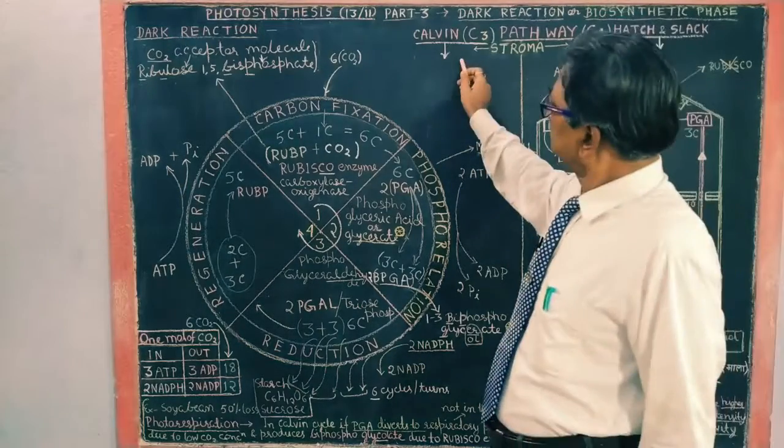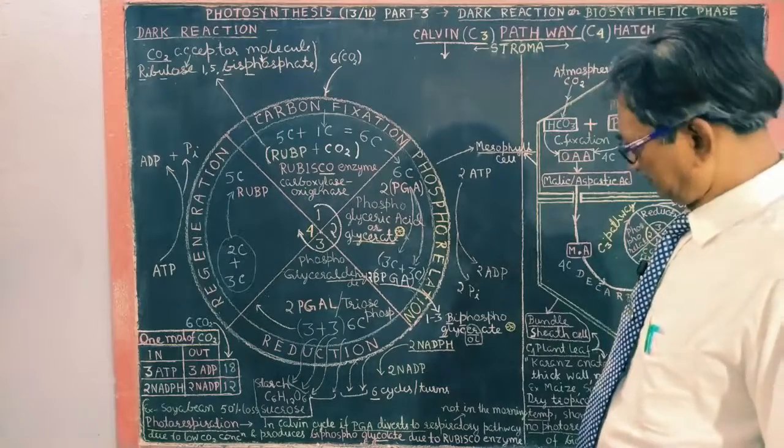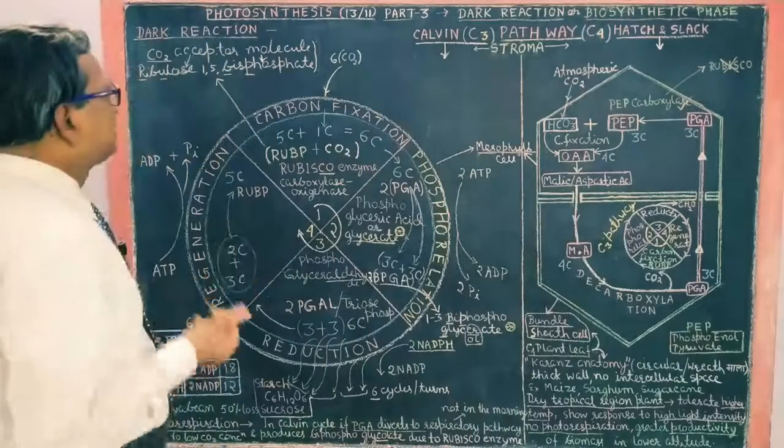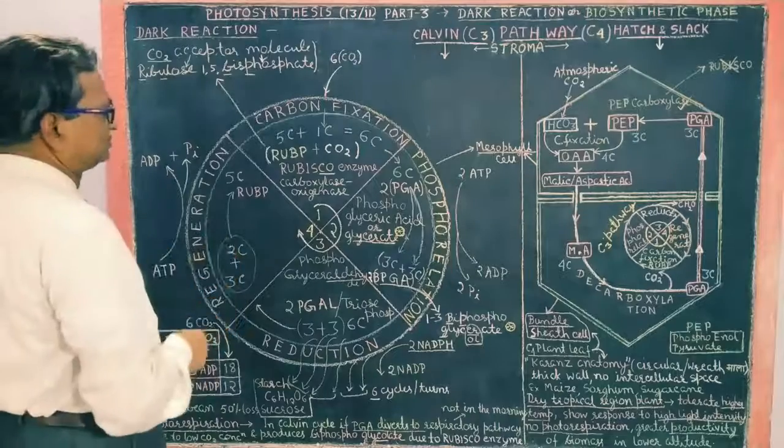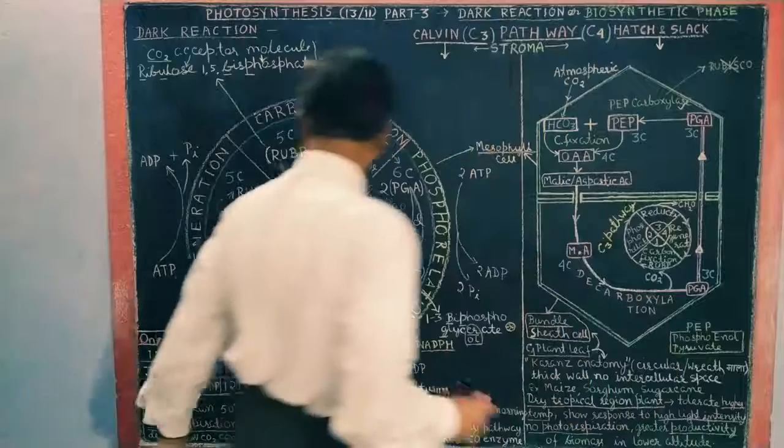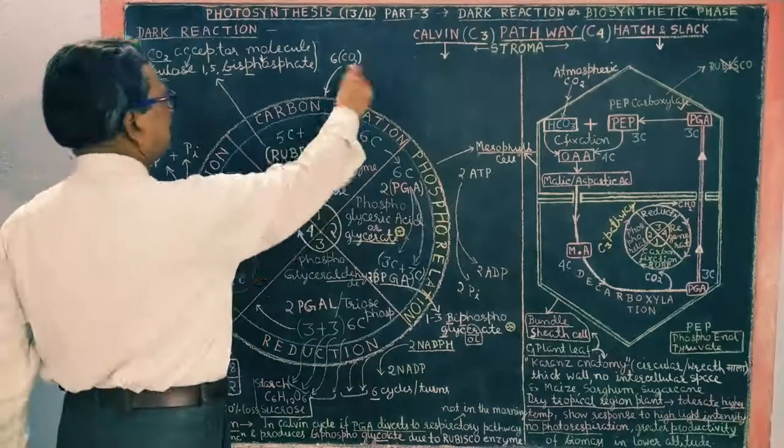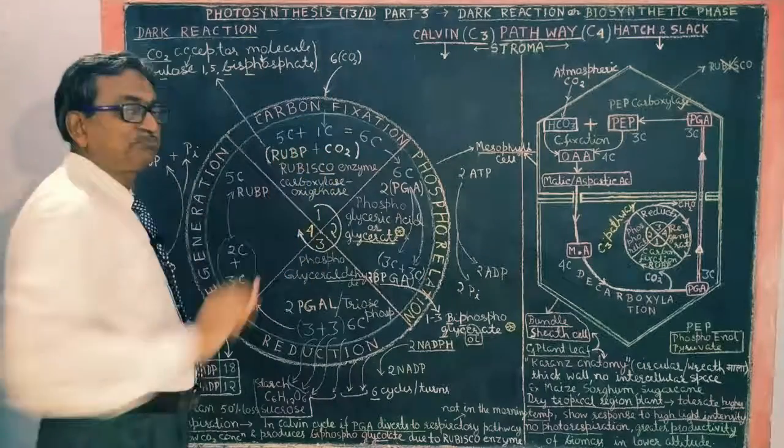It is named after the scientist who discovered this cycle. So most of the plants follow this cycle, Calvin cycle, which is known as C3 plant. So it is very common. Now what happens in this Calvin cycle?